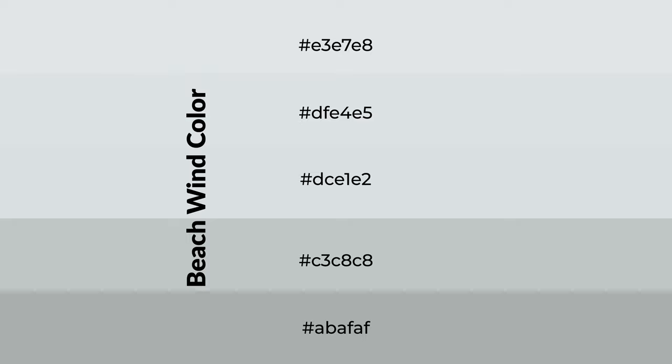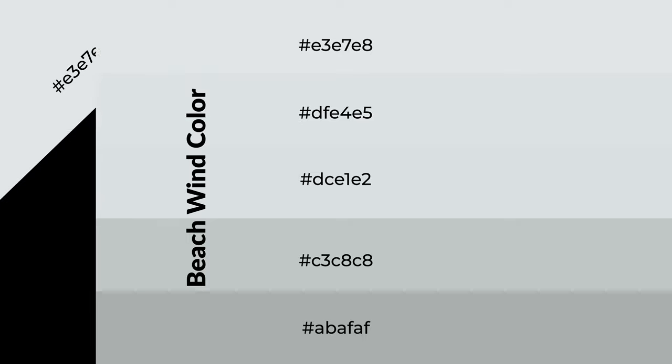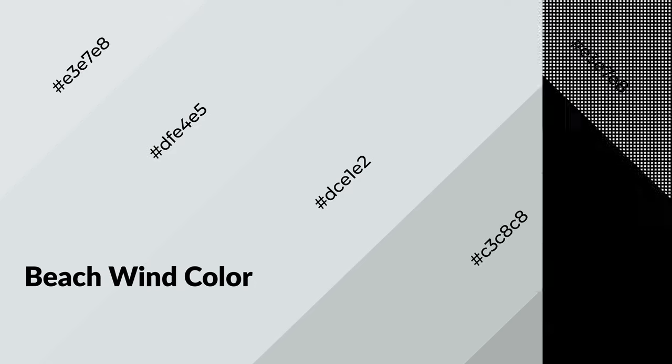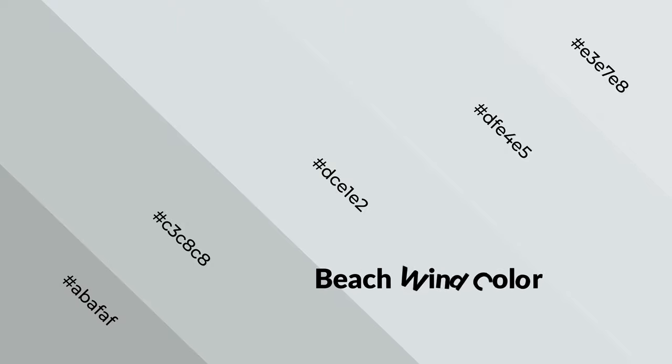To generate shades of a color, we add black to the color. It is used in patterns, 3D effects, and layers. Shades create depth and drama. Beach wind is a cool color and it emits calming, serene, soothing, refreshing, spacious, unwinding, peace, and relaxed emotions.